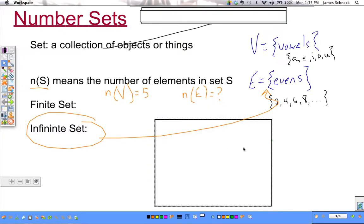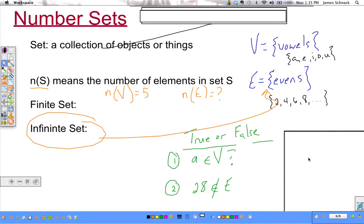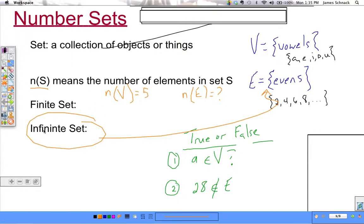Now a couple questions here. True or false? Number one, A is an element of V. And that little E looking thing, in between the A and the V, is this character, and it means is an element of. So, is A an element of V? Let's go look up that set V. Is A in there? Yeah, it is. So, this is true.